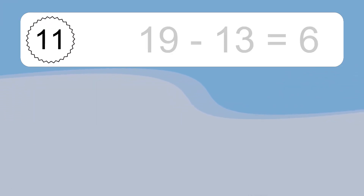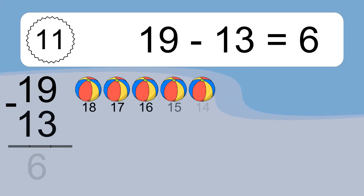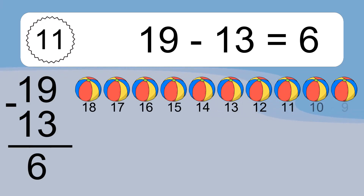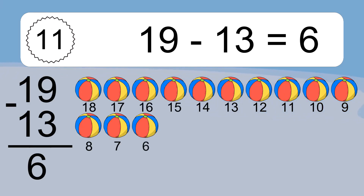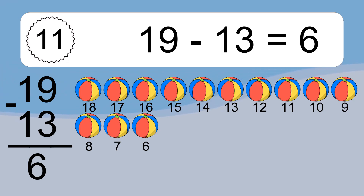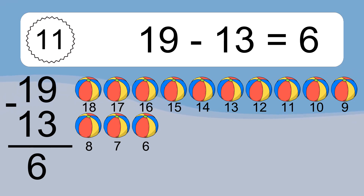19 minus 13 equals 6. Let's count it: 18, 17, 16, 15, 14, 13, 12, 11, 10, 9, 8, 7, 6.